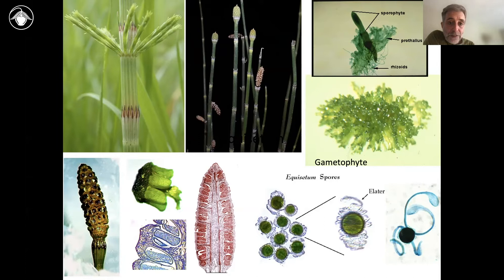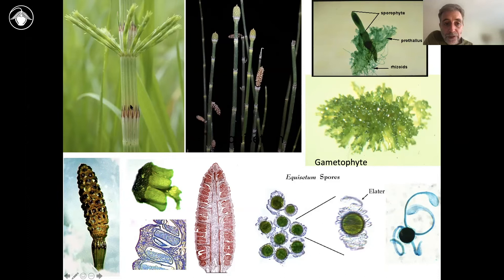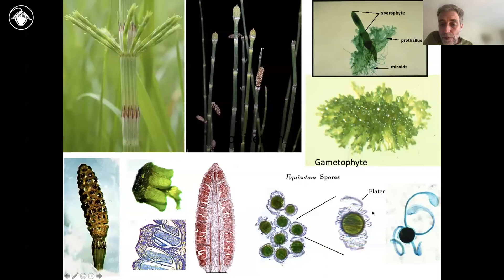Among the things that make Equisetum unusual: they have very little by way of leaves — almost the entire plant is stem. All of these structures, including that big one in the middle, are stems. All that's left of the leaves are these little sheaths, these little teeth along the sheath. Their sporangia are arranged on these weird upside-down umbrellas, and they produce really interesting spores that are green — they have chlorophyll, which is unusual — and they have appendages called elaters that help them disperse, flopping about as humidity changes.